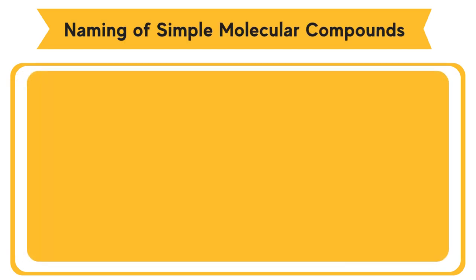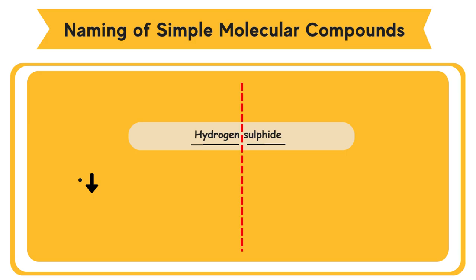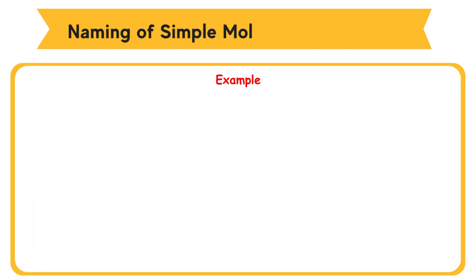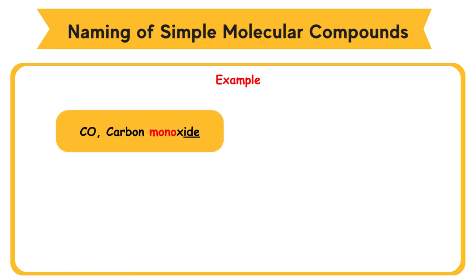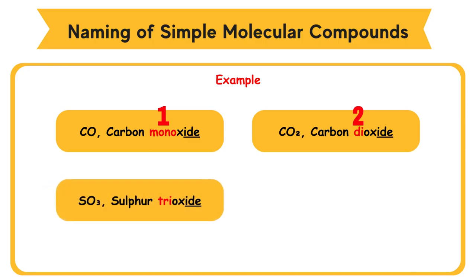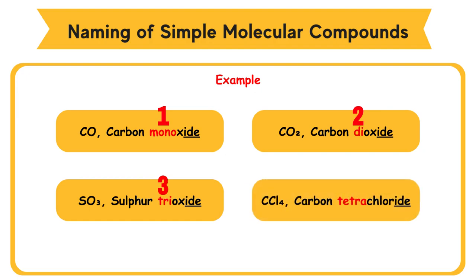Naming of simple molecular compounds: for example, hydrogen sulfide. The name of the less electronegative element is written first with its name maintained. The name of the more electronegative element is added with the ending '-ide'. Greek prefixes are used to show the number of each element in the molecule: mono = 1, di = 2, tri = 3, tetra = 4. Examples: CO — carbon monoxide; CO₂ — carbon dioxide (di means two oxygen atoms); SO₃ — sulfur trioxide; CCl₄ — carbon tetrachloride.